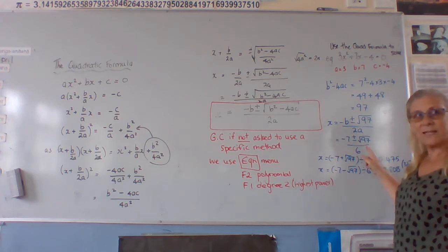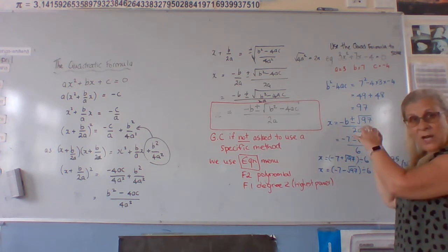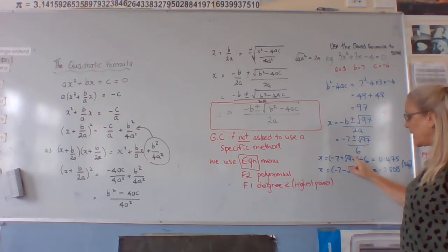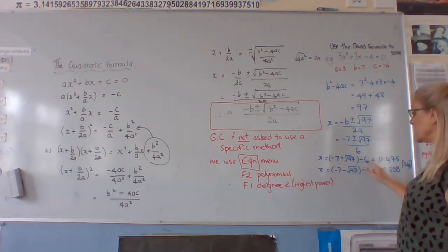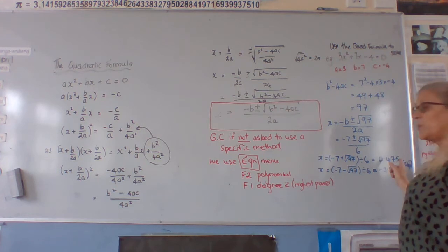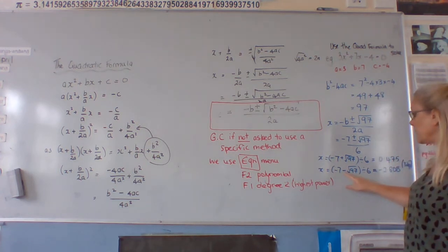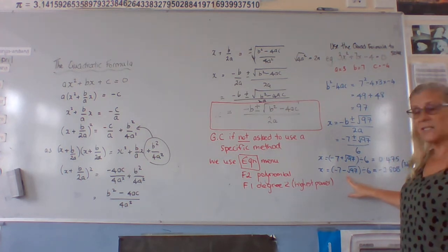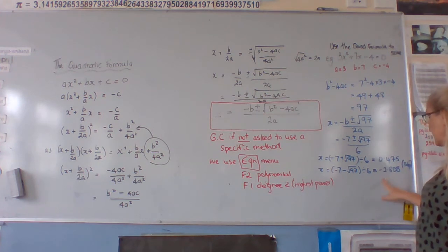All right, so therefore when you are calculating this, you need to make sure you do the top line divided by the bottom line, so put the top line in bracket. Negative 7 plus square root of 97 divided by 6 equals 0.475, and negative 7 minus square root of 97 divided by 6 equals negative 2.808 to 3 decimal places.